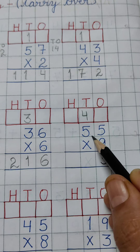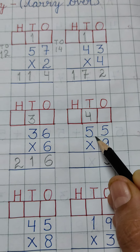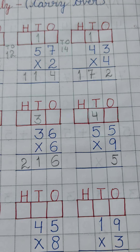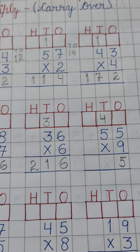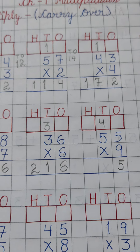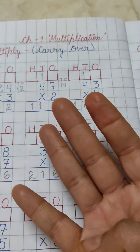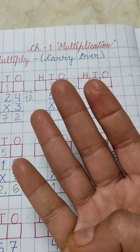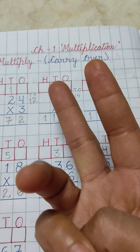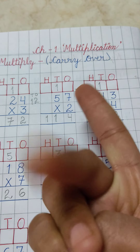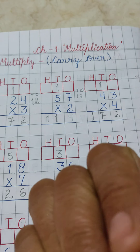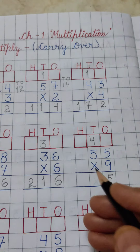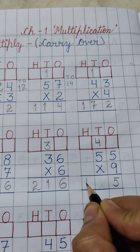Again 9 5's are 45, plus 4. Keep 45 in your mind and 4 on your fingers. What comes after 45? 46, 47, 48, 49. So we have to write 49 here, and the product is 495.